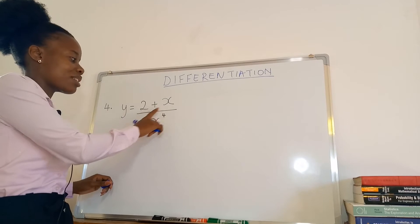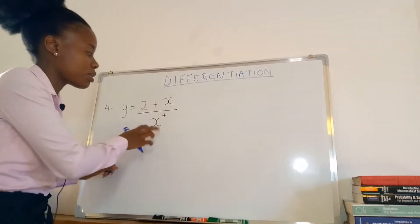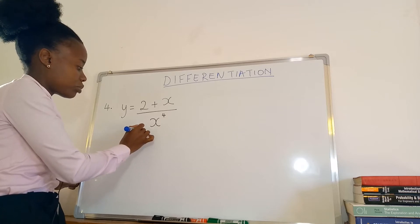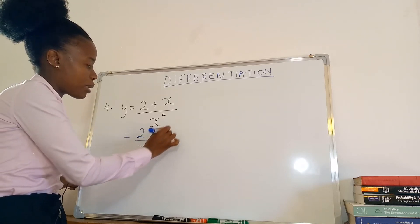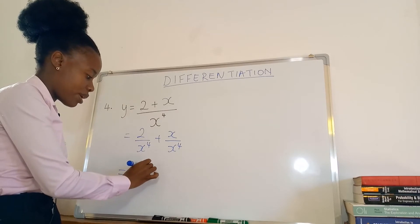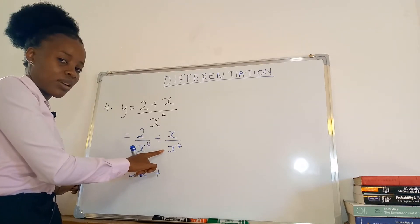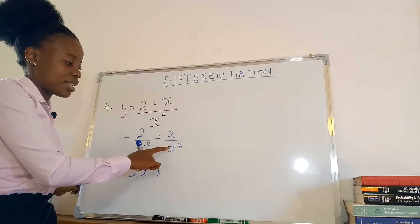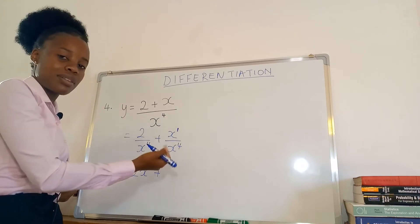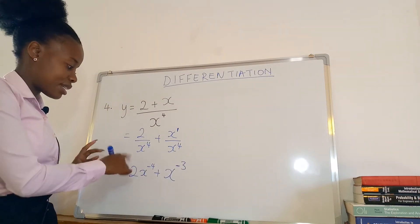Number four: y equals (2 + x) over x to the power four. When you have a denominator, change it so everything is in the numerator. Split it as 2 over x to the power four plus x over x to the power four, which gives 2x to the power negative four plus x to the power negative three, since dividing same-base terms means subtracting powers: one minus four equals negative three.